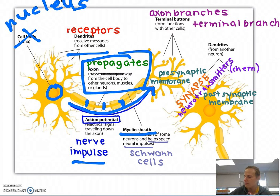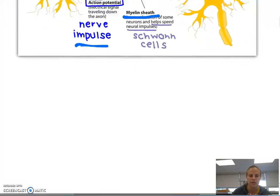Now once the message gets to the terminal buttons, also known as the axon branches, also known as the terminal branches, it needs to be passed along. So you're gonna have the message via neurotransmitters pass through what's called the synapse and travel to the dendrites of the neighboring neuron. How that actually happens is something that we're going to address a little bit later.